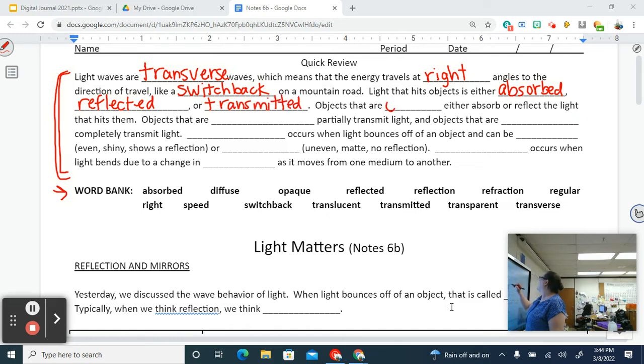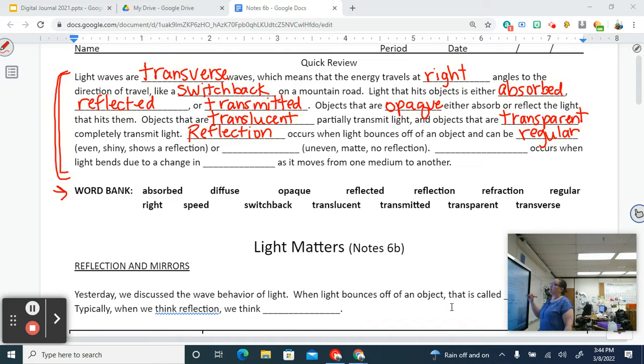Objects that are opaque either absorb or reflect the light that hits them. Objects that are translucent partially transmit light, and objects that are transparent fully transmit light. Reflection occurs when light bounces off of an object and can be regular, which means that it's even and shiny and you see yourself.